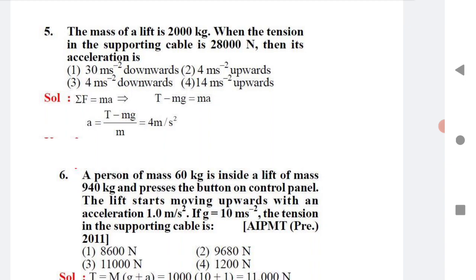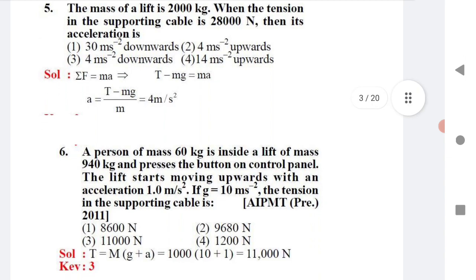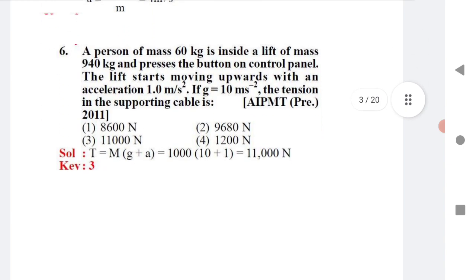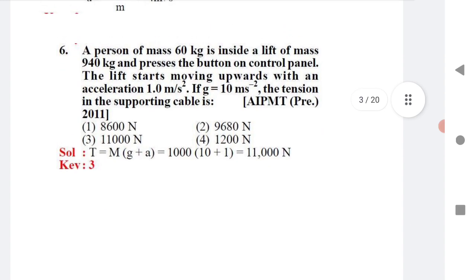Question 4: A lift has a mass of 2000 kg. When the tension in the supporting cable is given, the acceleration formula is: a = (T − mg) / m. Substitute the value of tension and mass to get the answer.